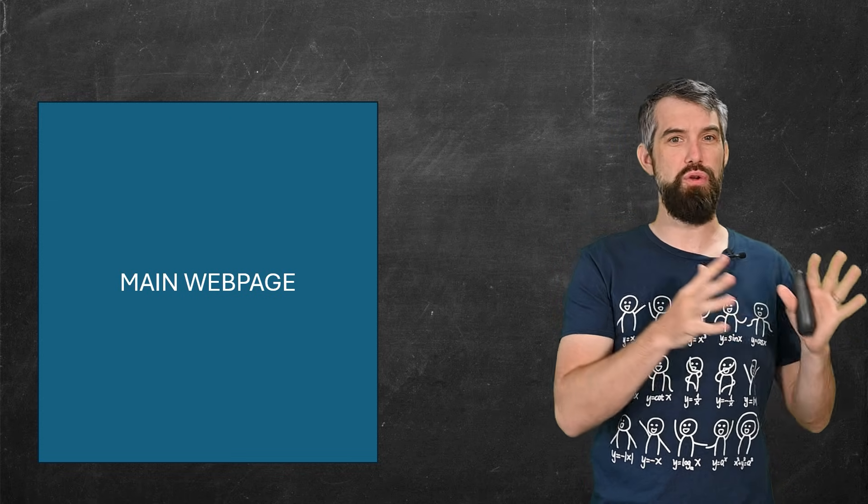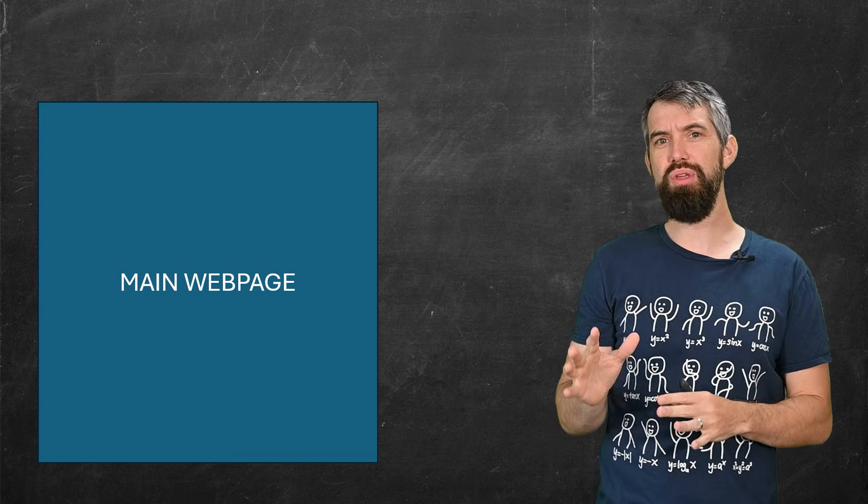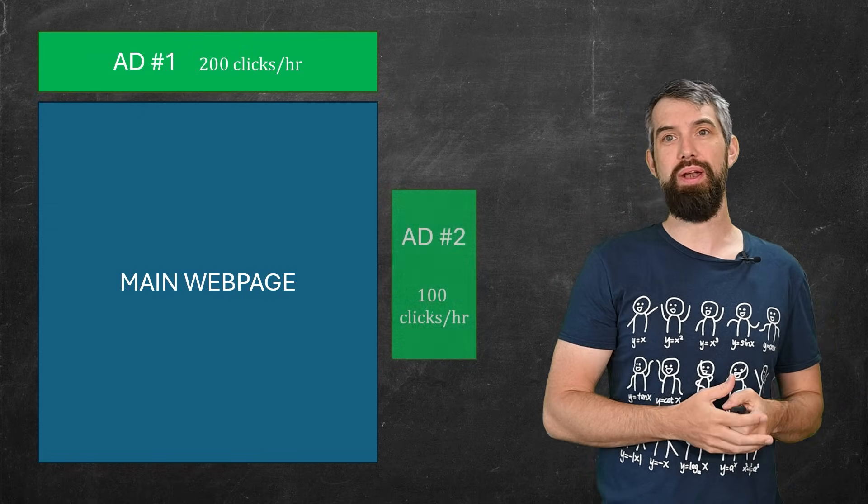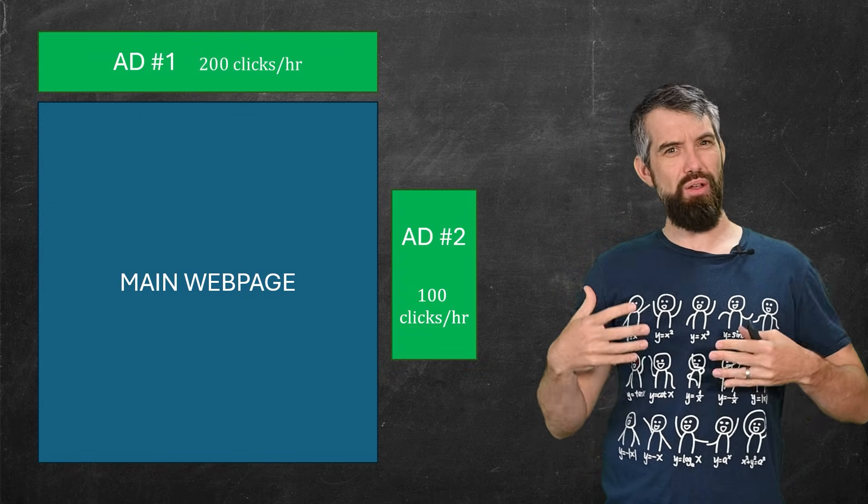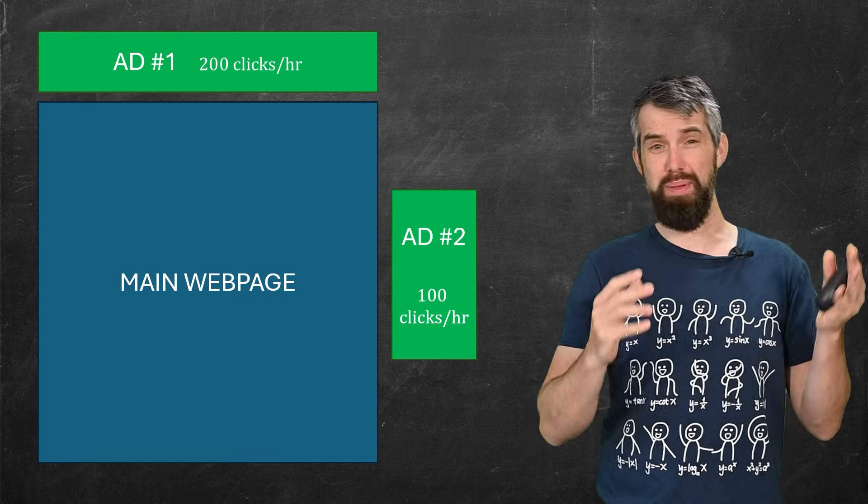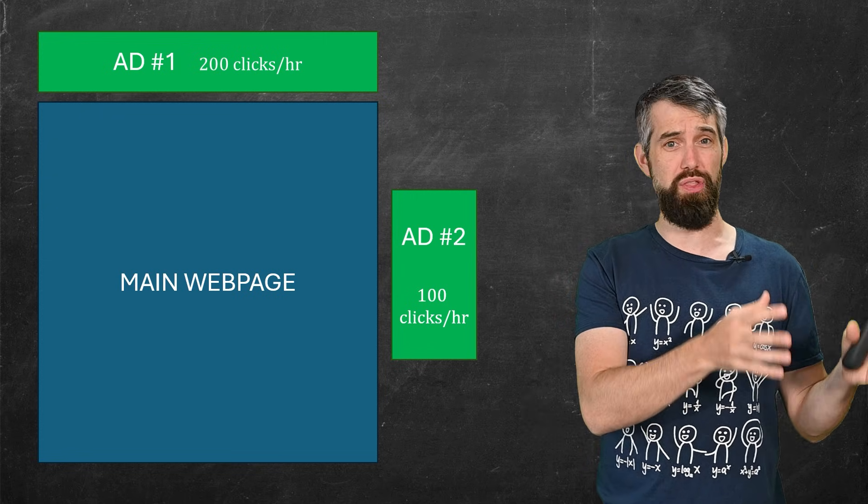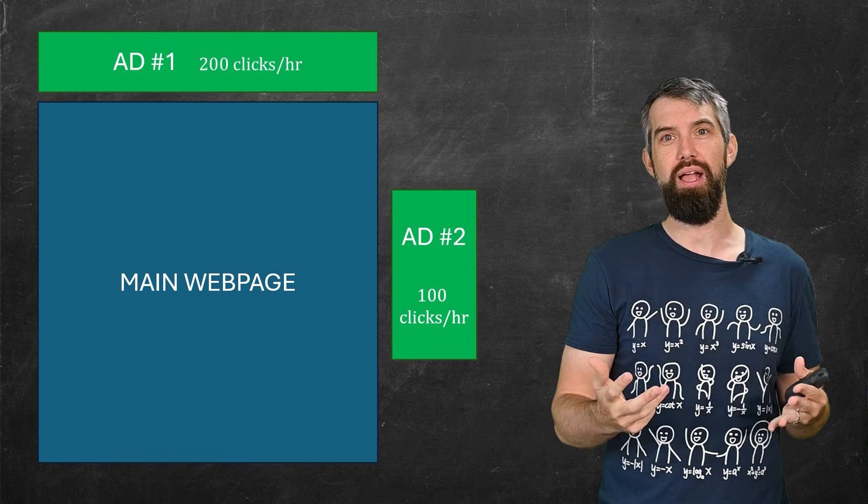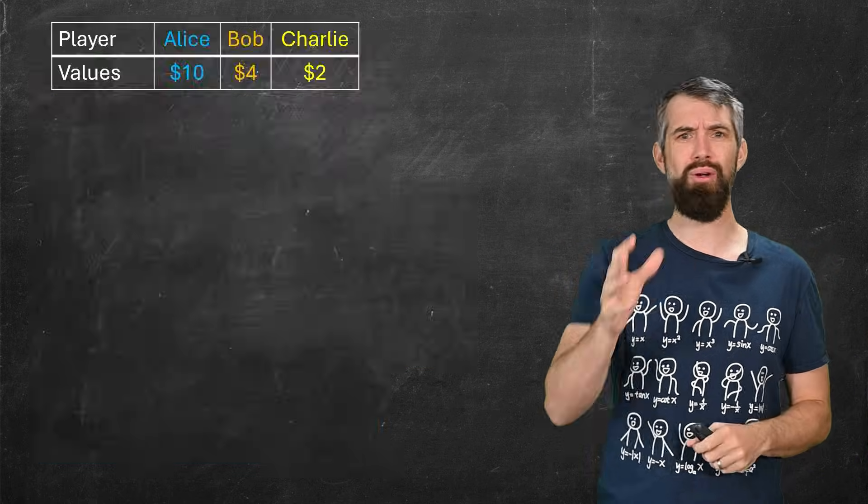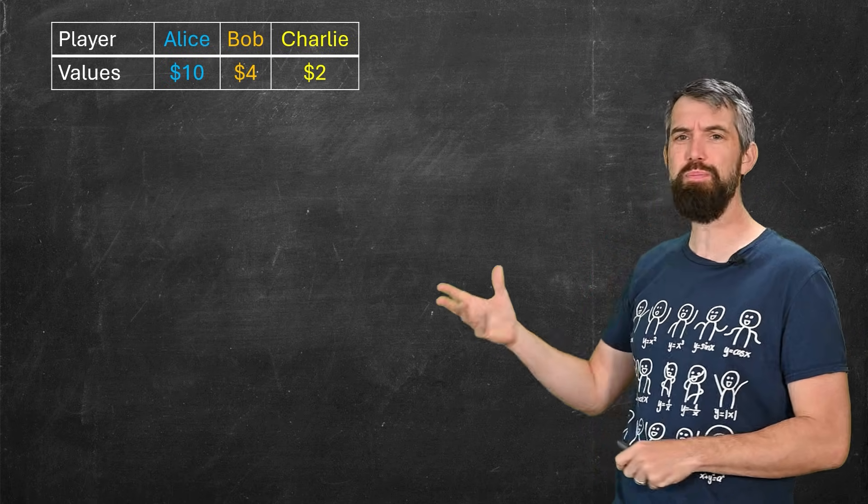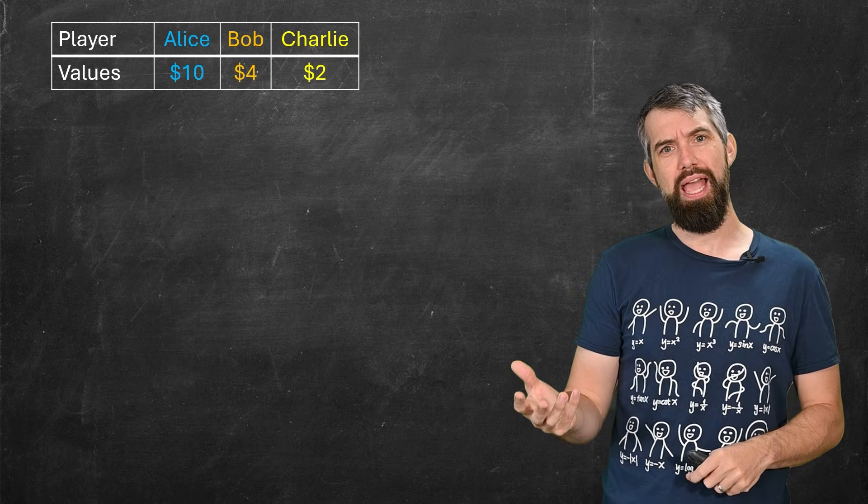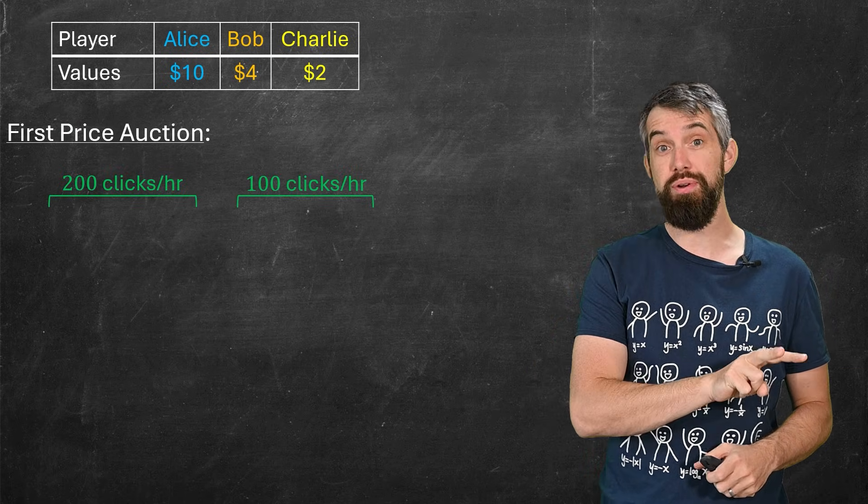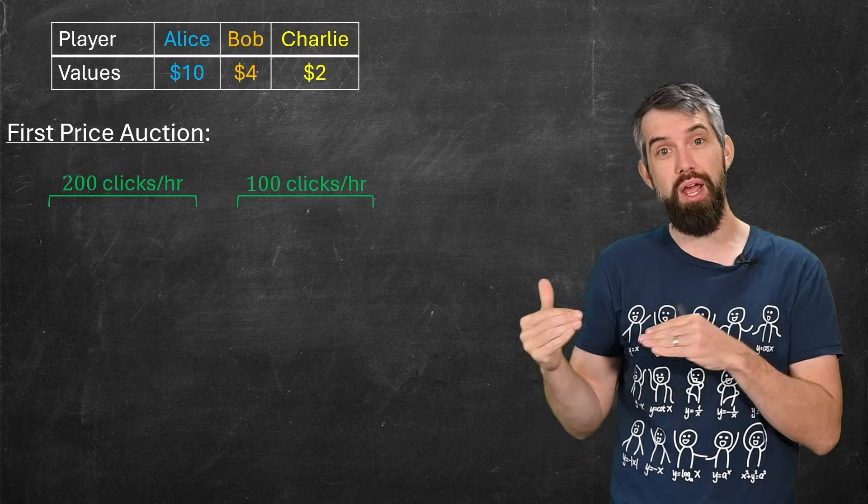Back to our story of Yahoo versus Google. Let me tell you what Yahoo did back in the early 2000s. Now if you imagine there's an ad on the top and an ad on the side, often the ad on the top is like a better ad. Like maybe 200 people are gonna click it per hour for the top ad, but that sidebar ad, only 100 people are gonna click it per hour. The top one is better than the side one. So now in my setup, I want to imagine I got three players, Alice, Bob, and Charlie, and they're bidding on these two different slots. One is a 200 clicks per hour slot, and the other is a 100 clicks per hour slot.